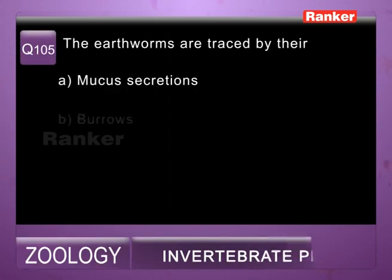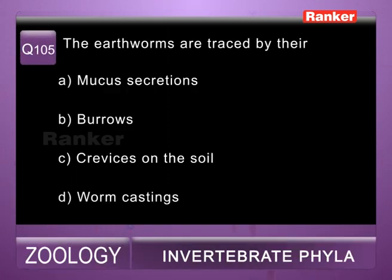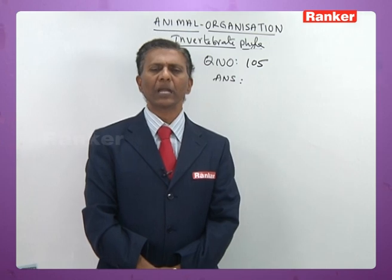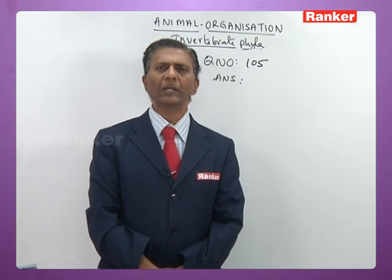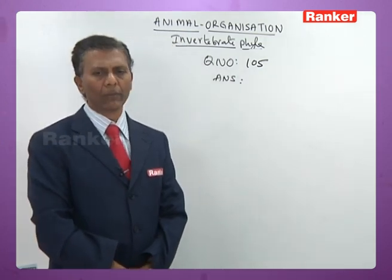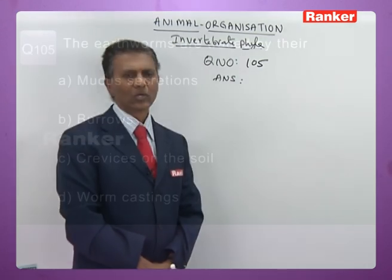Question 105: earthworms are placed by their — a) mucus secretion, b) burrows, c) crevices in soil, d) worm castings. Earthworms can be identified by means of their fecal pellets called worm castings. So 105th correct answer is d) worm castings.